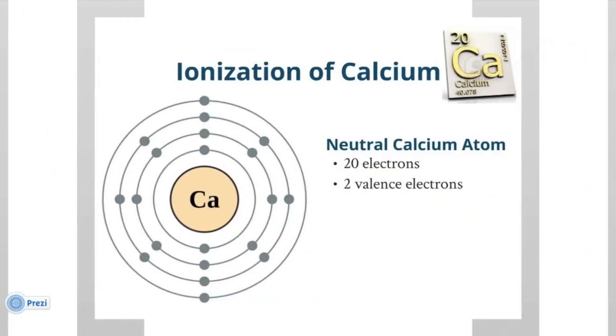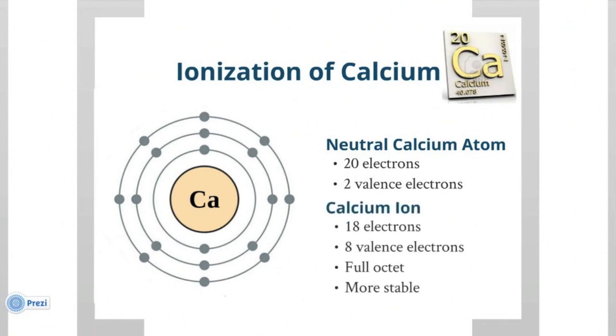Another example, calcium. A neutral calcium atom has 20 electrons and it has 2 valence electrons on its outermost shell. Now, watch the figure on the left carefully, it's going to turn into a calcium ion, which has 18 electrons and 8 valence electrons on its outermost shell, giving it a full octet and making it more stable.